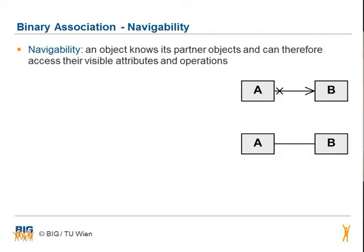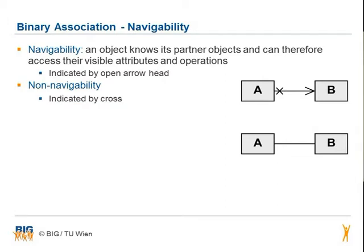Navigability defines if an object knows its partner objects and can therefore access their visible attributes and operations. It is indicated by an open arrow head. In the first example, A can access the visible attributes and operations of B, but B cannot access any attributes and operations of A because it is non-navigable, as indicated by the cross. In practice, navigability is mostly unified as shown in the bottom example.